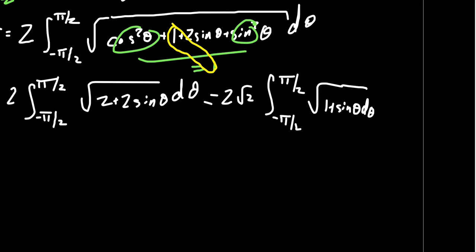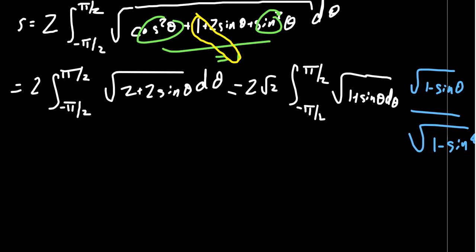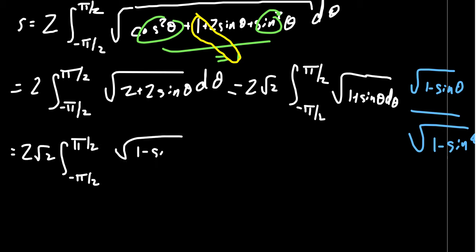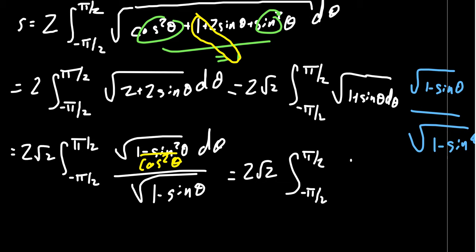The best technique here is to use the right trig identity. We multiply by the square root of 1 minus sine theta over itself to rationalize. Foiling that out gives the square root of 1 minus sine squared theta in the numerator. Since 1 minus sine squared equals cosine squared, the square root of cosine squared gives cosine. So we end up with 2 root 2 times the integral of cosine theta d theta over the square root of 1 minus sine theta.